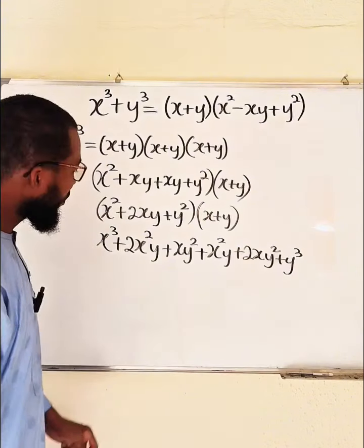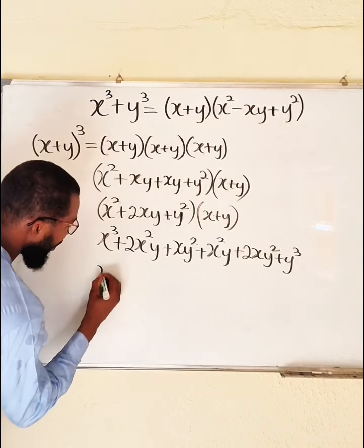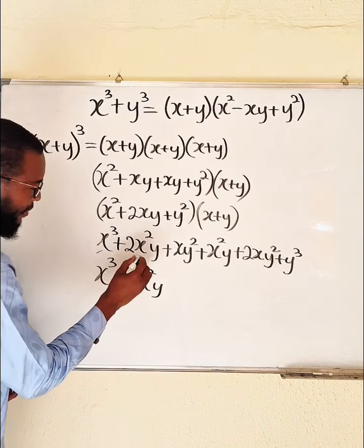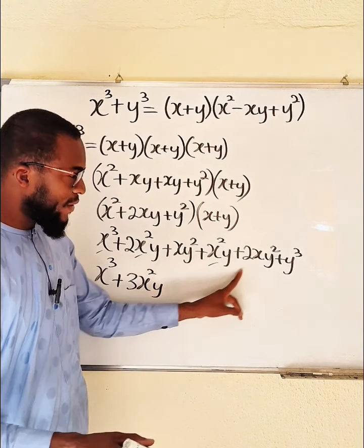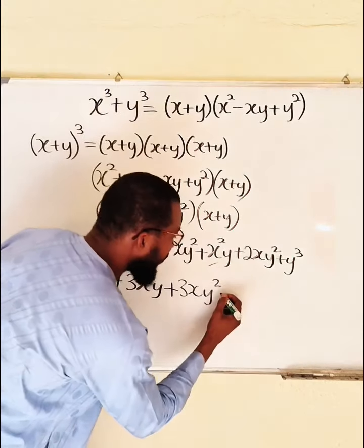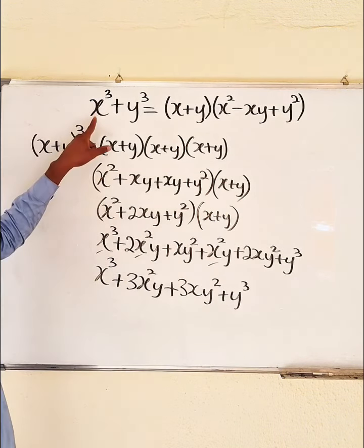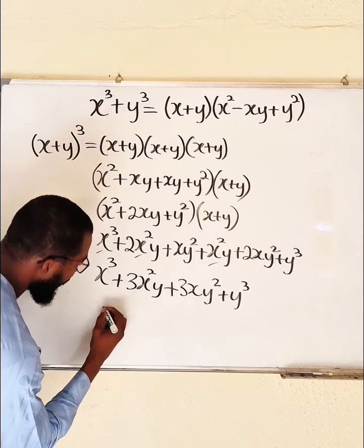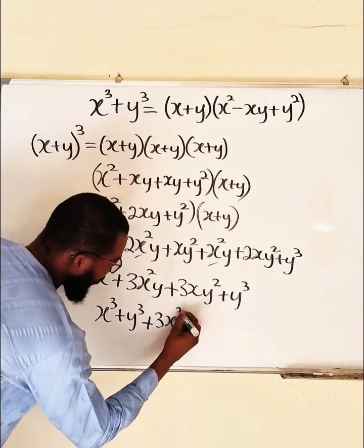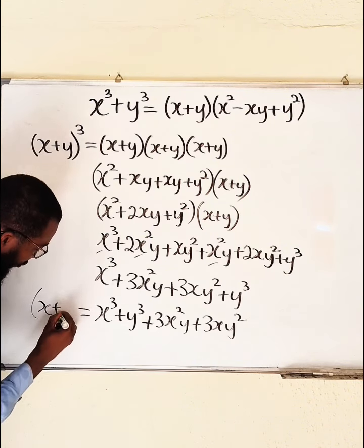Alright, let's see — do we have like terms? I can see 2x squared y here and 1x squared y here. If you join them, you have 3 of them. So we have x cubed plus 3x squared y. Then I have like terms here — we have 3 of them, that is 3xy squared. Lastly, we have y cubed. Remember, our main goal is to find x cubed plus y cubed, which are here. So let me bring them together. We have x cubed plus y cubed, plus 3x squared y plus 3xy squared. Remember, this is the expansion of x plus y to the power of 3.